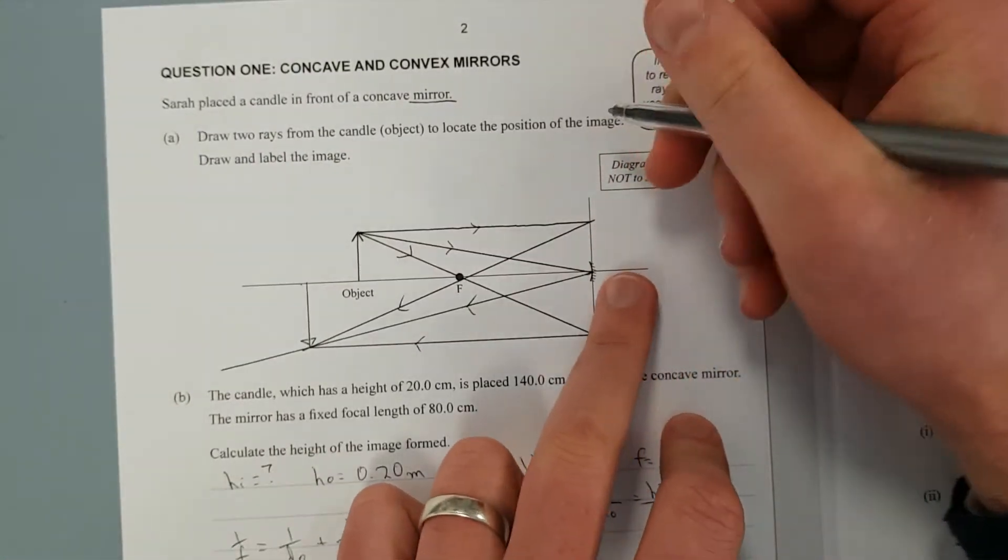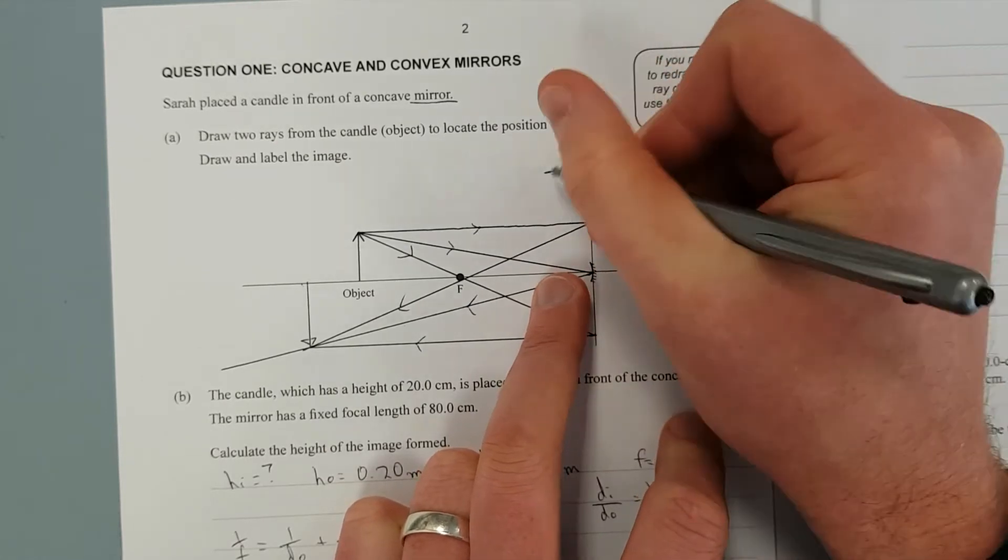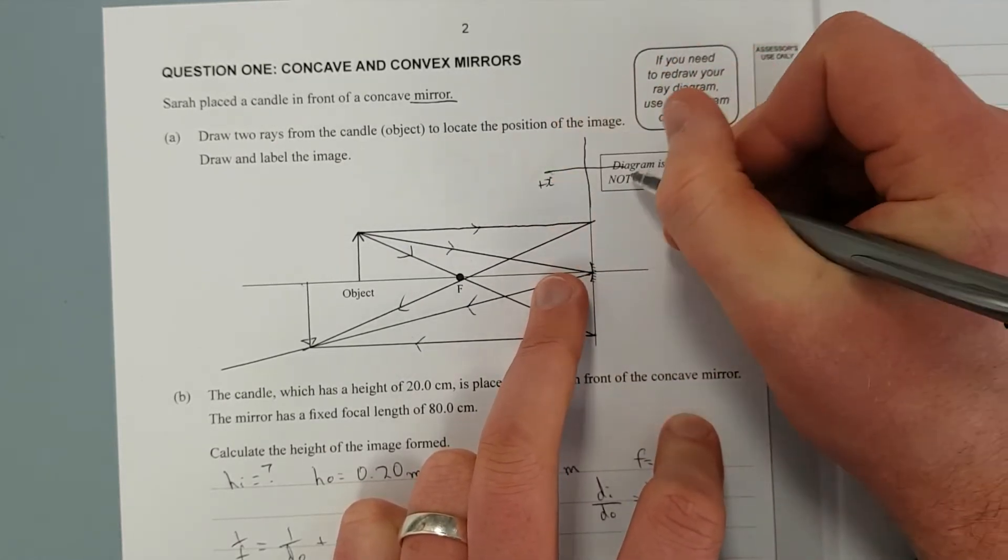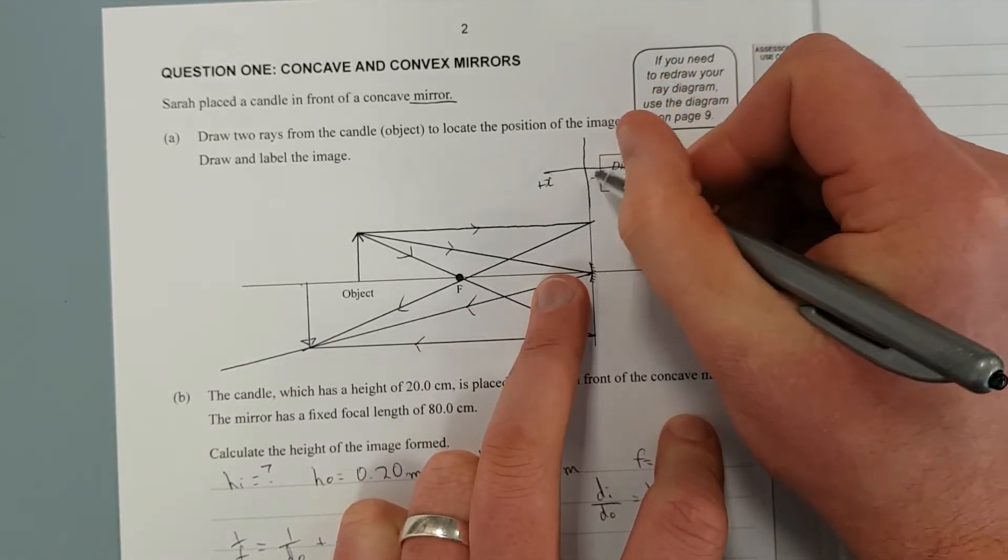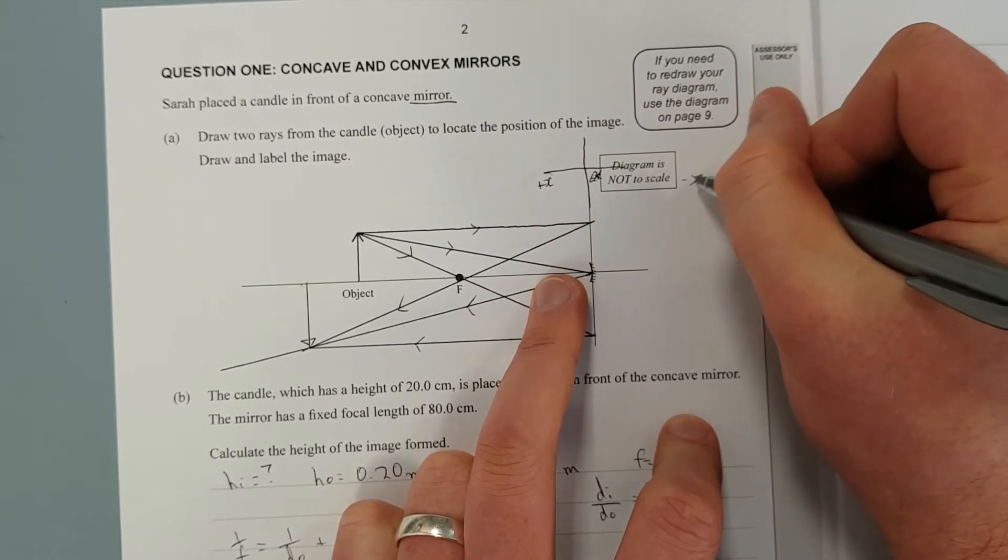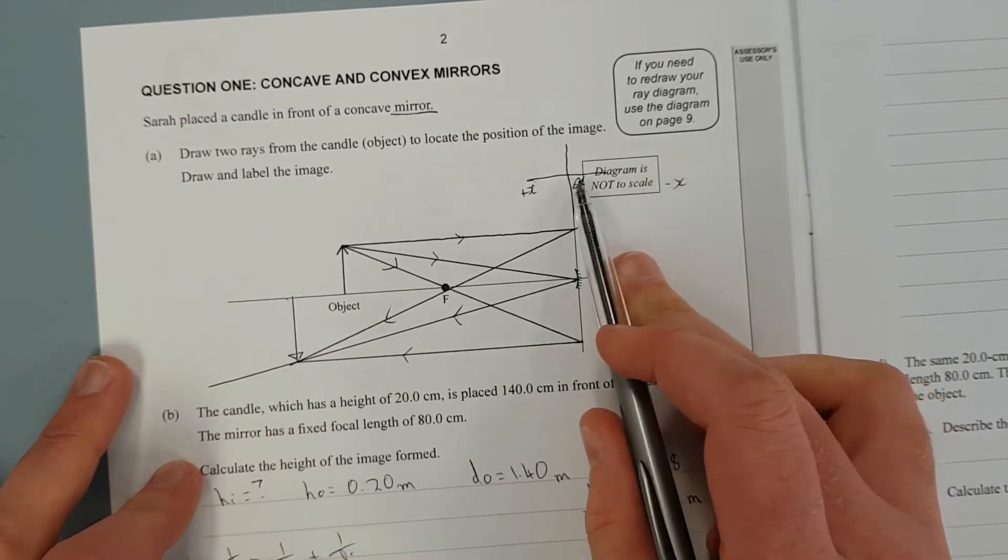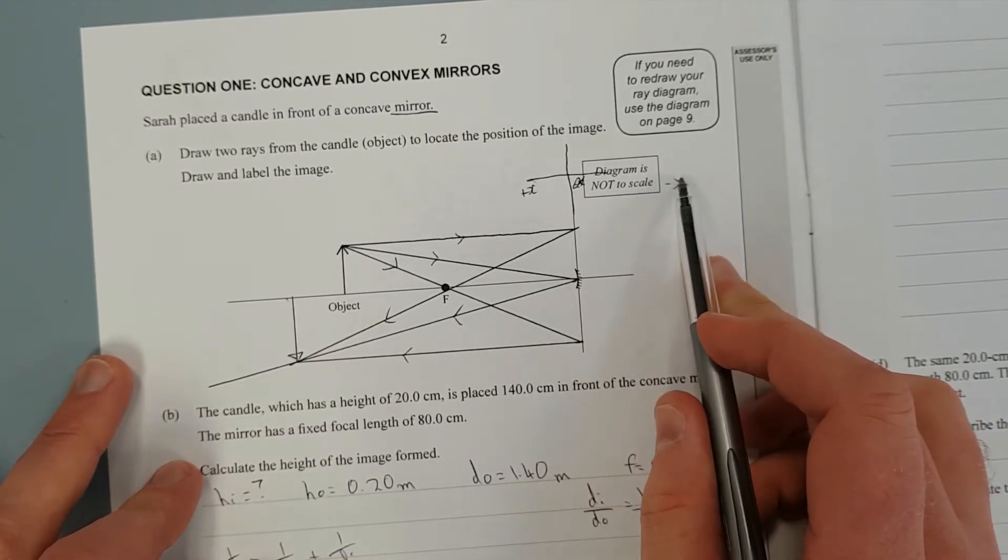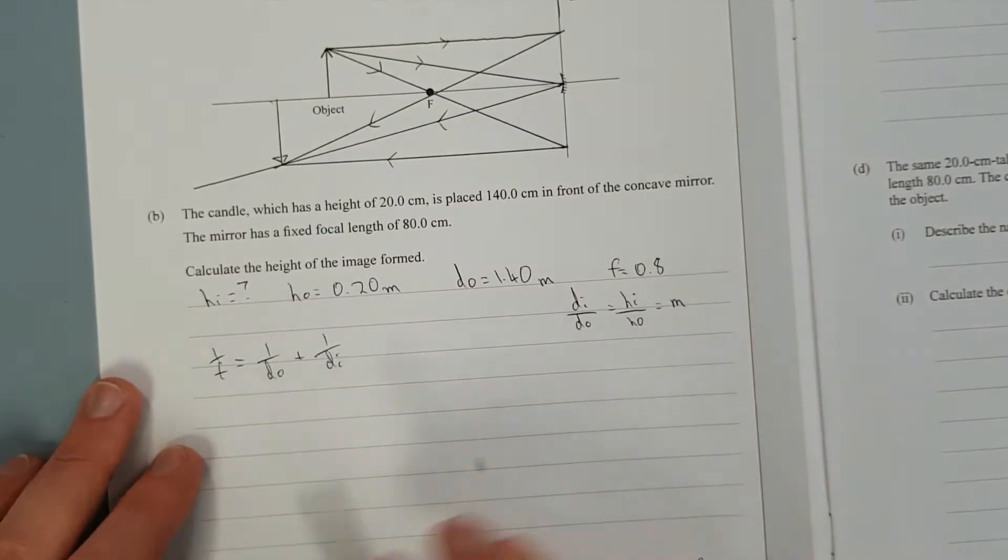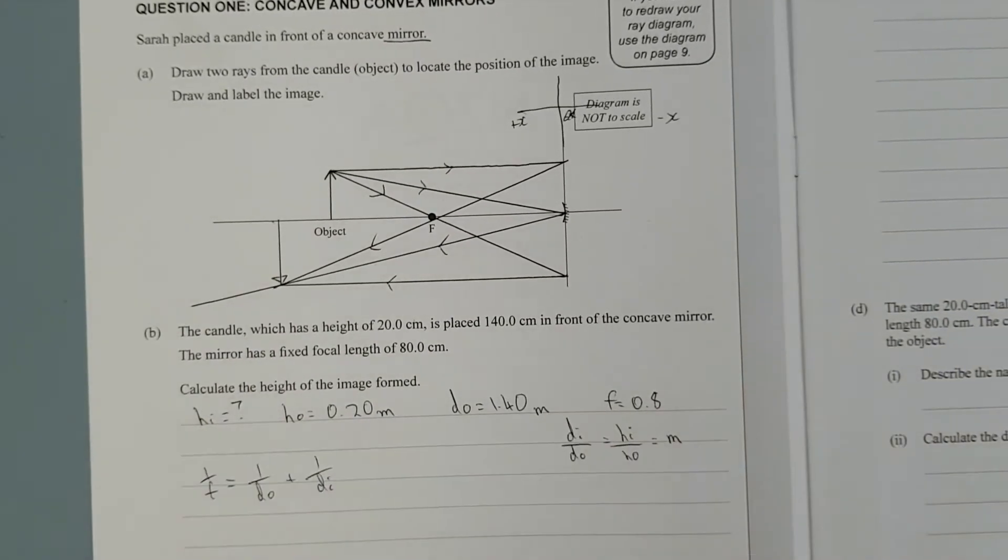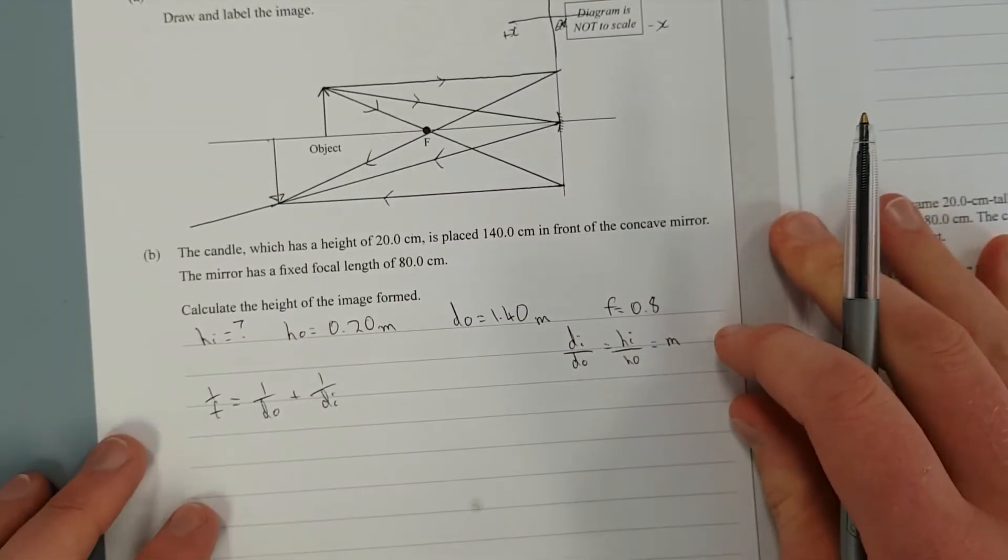So we're probably going to have to find DI, because we have DO, we have HO. To find HI we need DI. And we also have the focal point, F equals 0.8 meters. So we have on the formula sheet 1 over F equals 1 over DO plus 1 over DI. Side note, this is like a backwards Cartesian coordinate system. This is the positive x direction, this is the negative x direction. So anything on this side of the mirror, if you've got an image on this side of the mirror, it's negative. If the focal point is on this side of the mirror, that would be a negative focal point. Everything on this side is positive, everything on that side is negative.